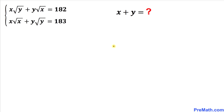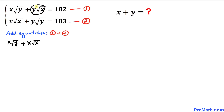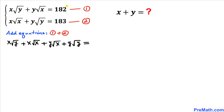Let's get started with the solution. We'll call the first equation as equation 1 and the second as equation 2. Now let's add these two equations together. Adding all terms on the left-hand side and adding 182 and 183 on the right-hand side gives us 365.